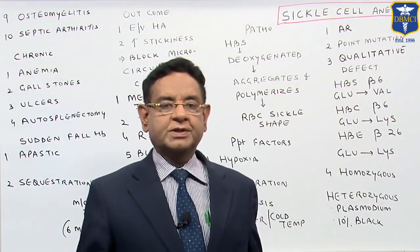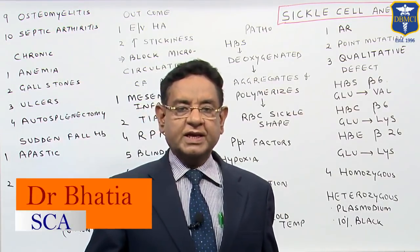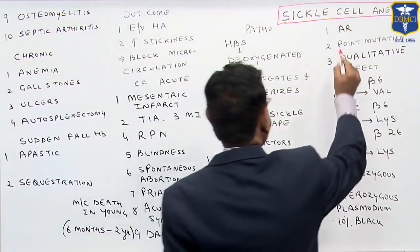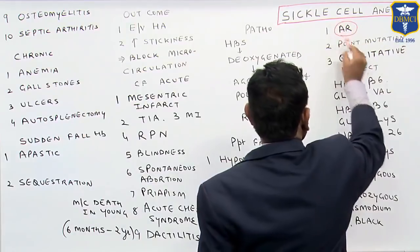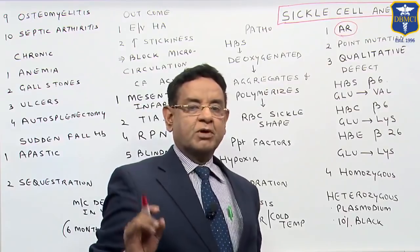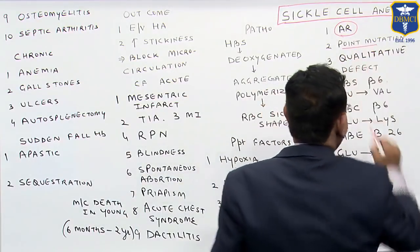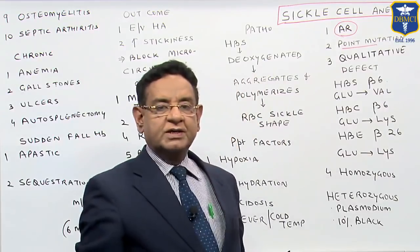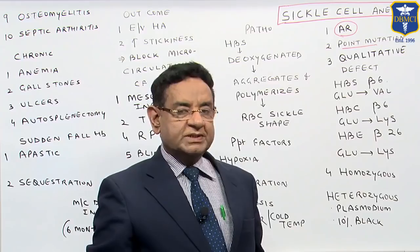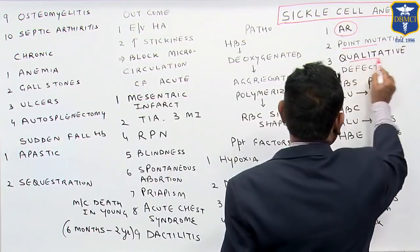Hello friends, now I will be talking to you about sickle cell anemia. It is an autosomal recessive disorder and the basic problem is a point mutation in the gene responsible for globin chain synthesis, and it is a qualitative defect.